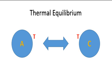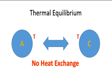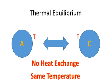So there will not be any exchange of heat between them and the temperatures are the same. Now we can say that body A is in equilibrium with body C. Now let us understand the zeroth law of thermodynamics.